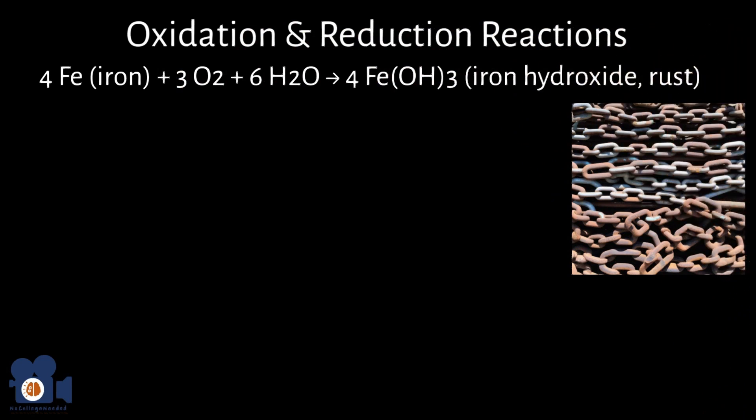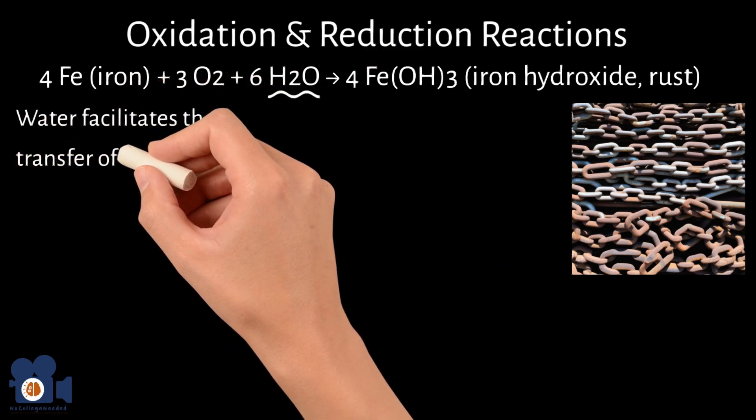In this reaction, iron reacts with oxygen and water to form iron hydroxide. The presence of water is crucial for rusting to occur because it facilitates the transfer of electrons between iron and oxygen.